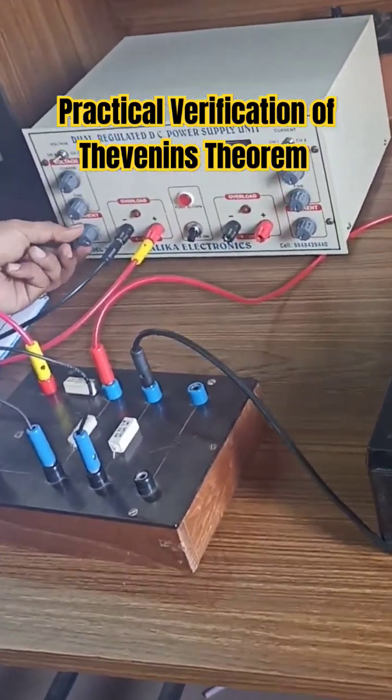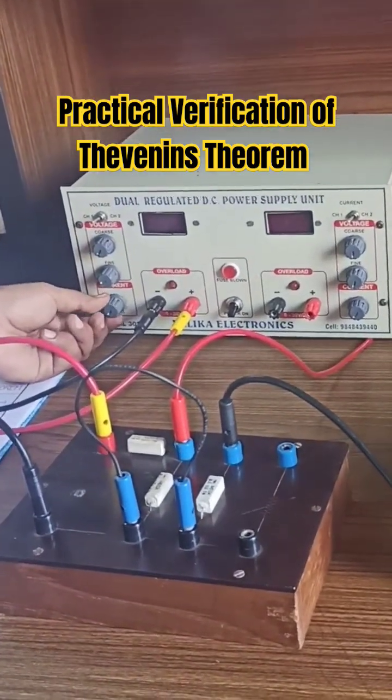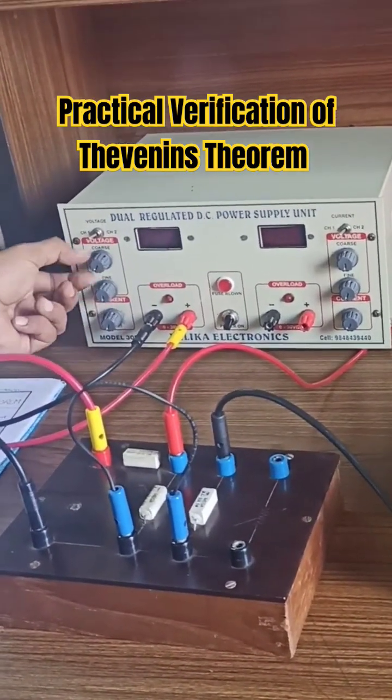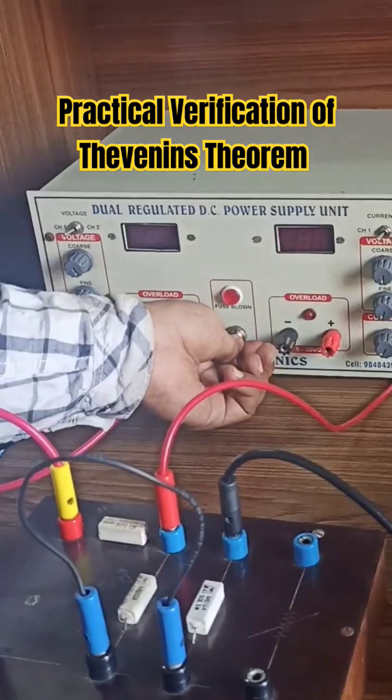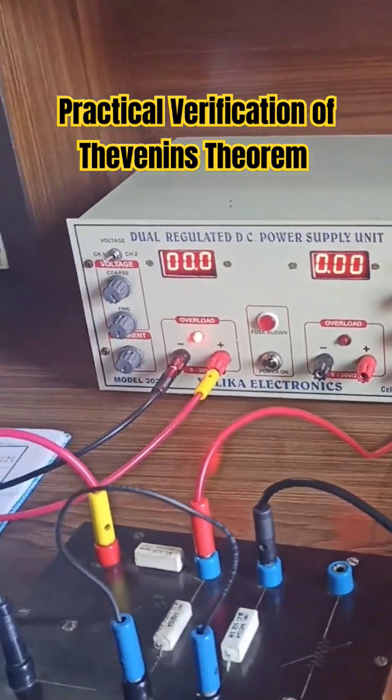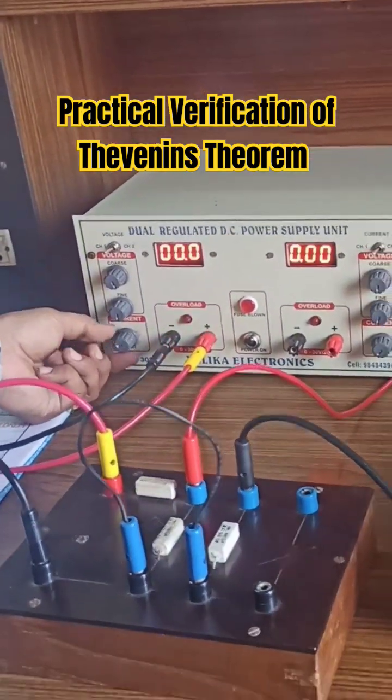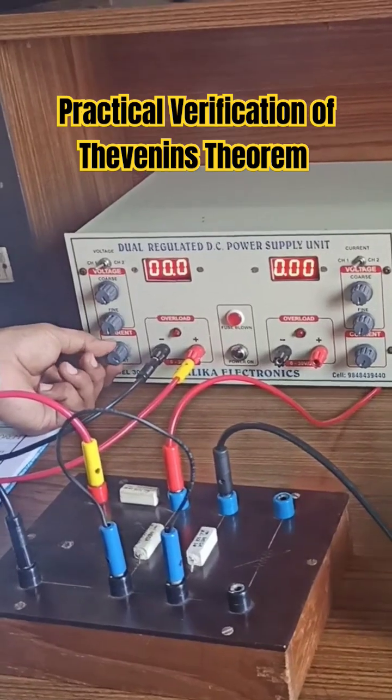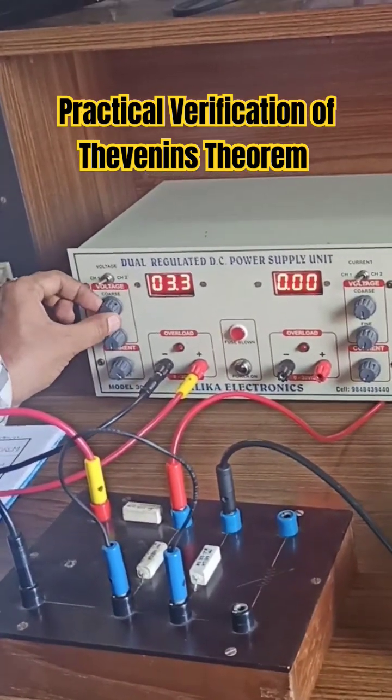The process of starting is initially, whatever may be the condition of the RPS, keep the current knob in minimum and voltage knobs also in minimum, just give the supply. Once you give the supply, keep the current knob to the maximum position and slowly increase the voltage.